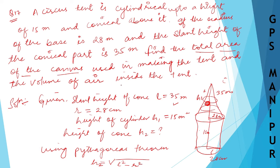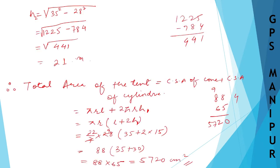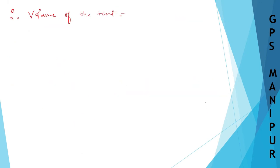Now we need to find the volume of the air inside the tent. Volume of the tent equals volume of the cone plus volume of the cylinder. Volume of cone = (1/3)πr²H2, and volume of cylinder = πr²H1.